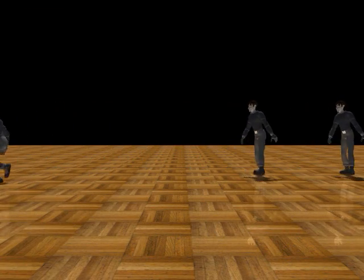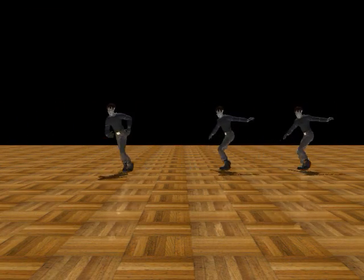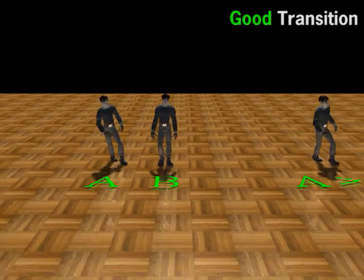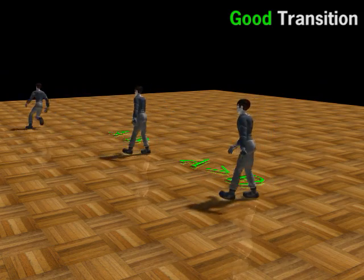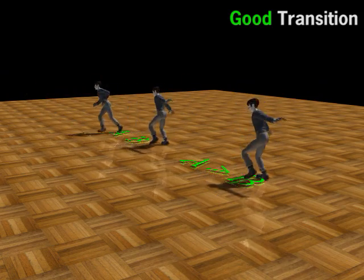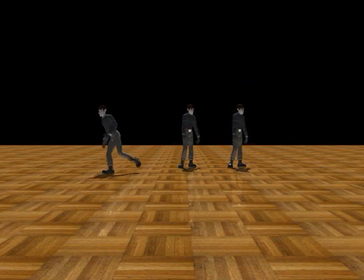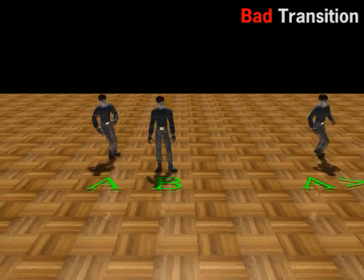When a push arrives, we choose a suitable example, deform it appropriately, and transition onto the result. This transition is good because it looks realistic. Some transitions lead to bad motions. This transition is bad because it doesn't look realistic.